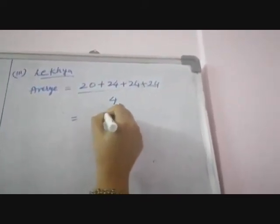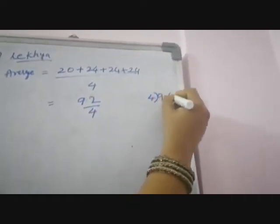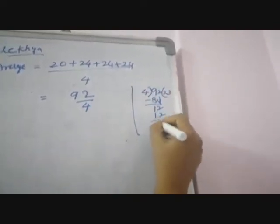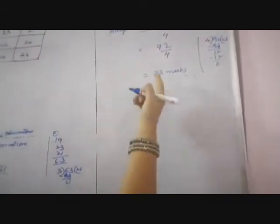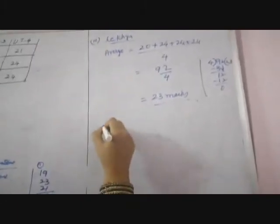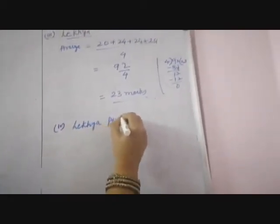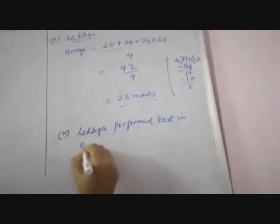This is nothing but 92 by 4. 4 goes into 92: 4 twos are 8, 4 threes are 12, giving 23 marks. So Lekhya's average marks is 23. The fourth bit is asking: who performed best? Anju got 21 marks, Nilesh got 16.5 marks, and Lekhya got 23 marks. So Lekhya performed best in English.